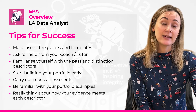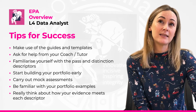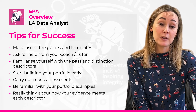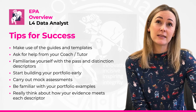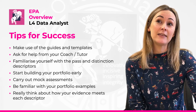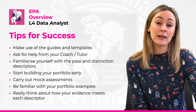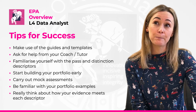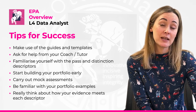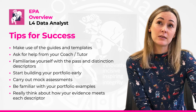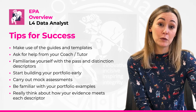Familiarise yourself with the pass and distinction criteria and the amplification. The key is to really break down the pass and distinction criteria and make sure they're being covered fully. Look at the wording and look at the difference between a distinction and a pass. The command verbs used will indicate the level of depth that is required, and the amplification document in the toolkit will explain all of this in a lot more detail. Go through your evidence and see any areas which might potentially be weaker — you can use multiple evidence sources to cover one pass descriptor if you need to. The most important part is that you cover all of them in full.